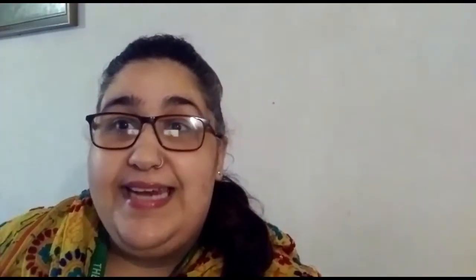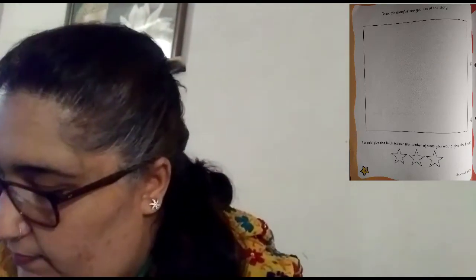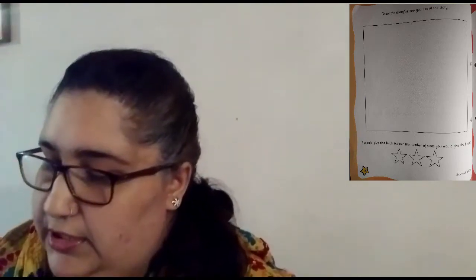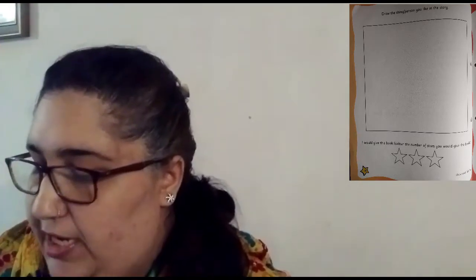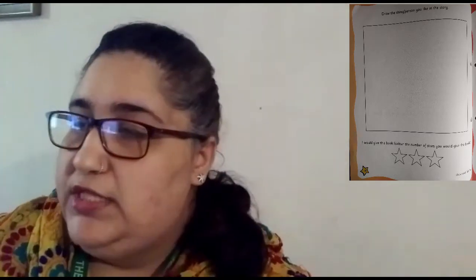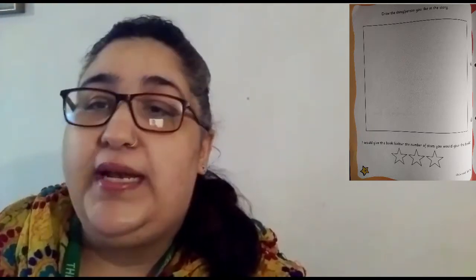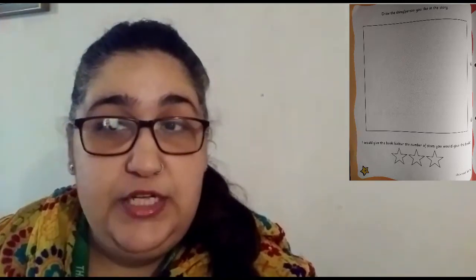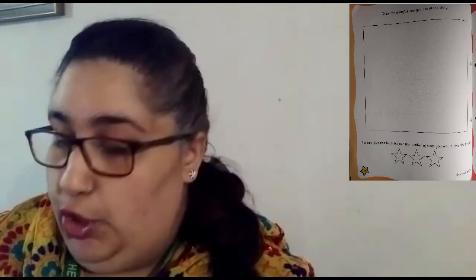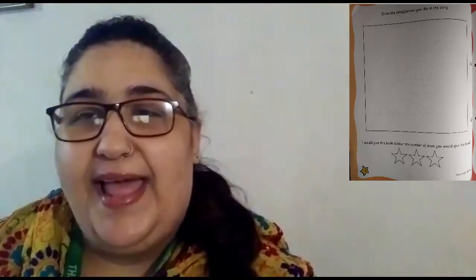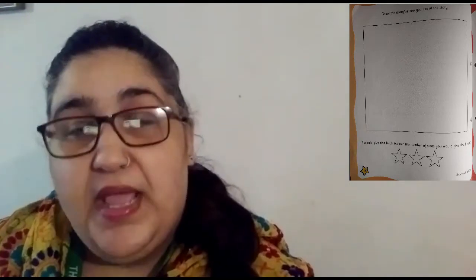After you complete this page, you are going to turn to the next page, page number 18. And when you turn to page 18, you have to draw the thing or person you liked in the story. Can you see on top over here, children, there is a big empty box. You have to draw your favorite person or the favorite thing that you liked about the story.